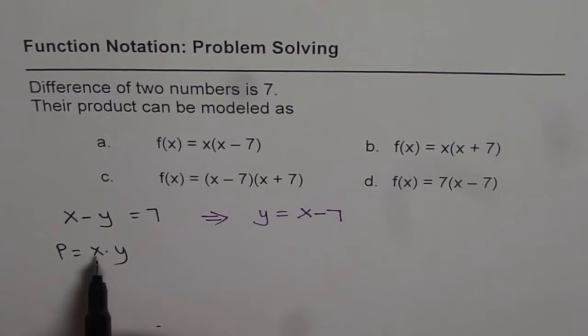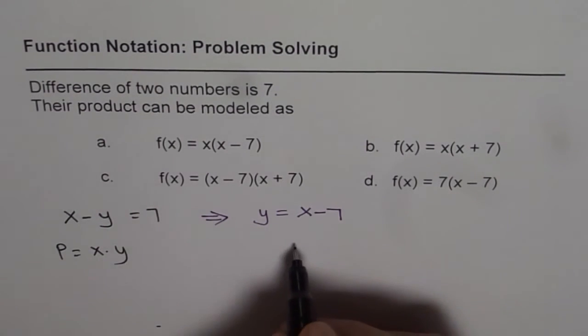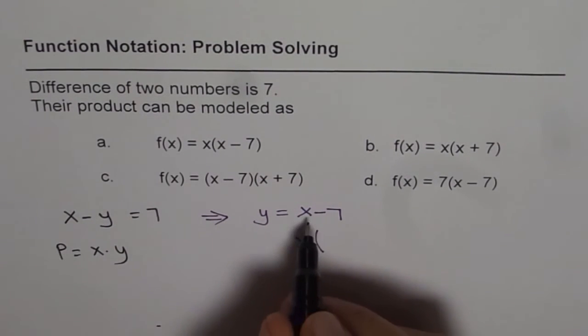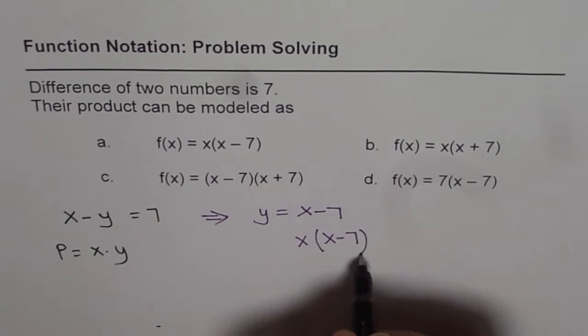Now once we know that y is x minus 7, then the product is x times y. So that product could be written as x times, instead of y, I will write x minus 7, right? x minus 7.